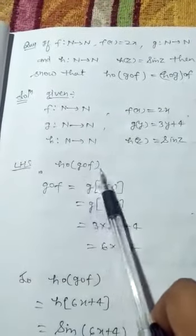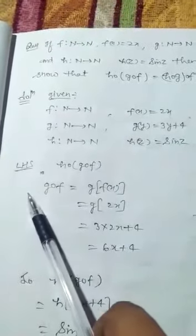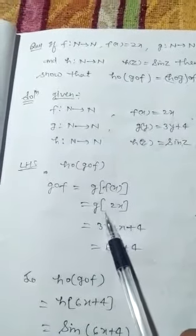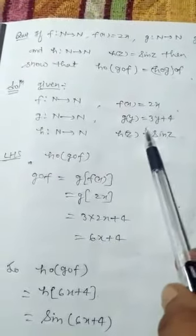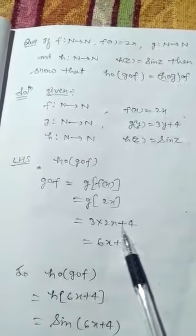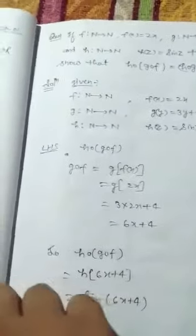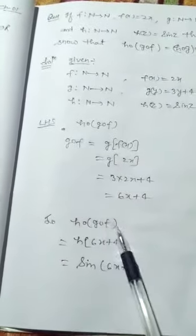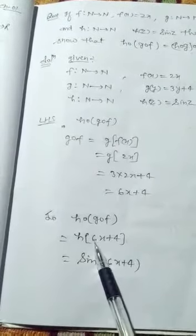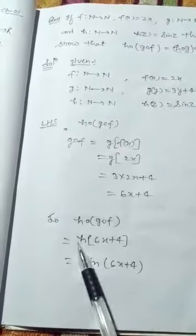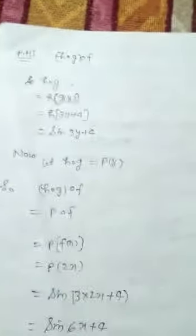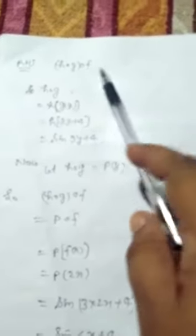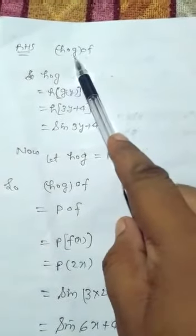To find h∘g∘f, we first find g∘f. So g(f(x)) = g(2x). Since g(y) = 3y + 4, we get g(2x) = 3(2x) + 4 = 6x + 4. Then h(g(f(x))) = h(6x + 4). Since h(z) = sin z, we get h(6x + 4) = sin(6x + 4).